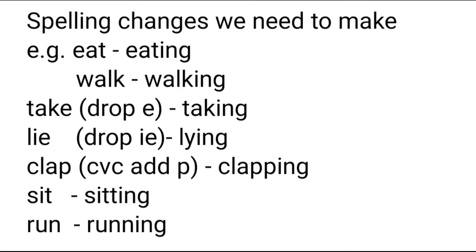Spelling changes needed when changing verbs into the past continuous tense: all action verbs can change into the present participle by adding -ing, like 'eat' → eating, 'walk' → walking. Some verbs require spelling changes. For 'take,' drop the 'e' and add -ing → taking. For 'lie,' drop 'ie' and add 'y' → lying. For 'live,' drop the 'e' and add -ing → living. Verbs with a consonant-vowel-consonant pattern should double the final consonant before adding -ing, for example: clapping, running. But there are exceptions like keeping, hurting, and so on.